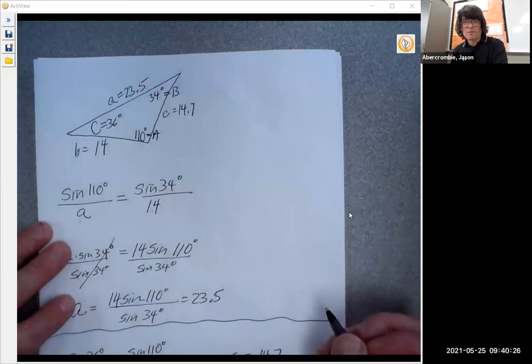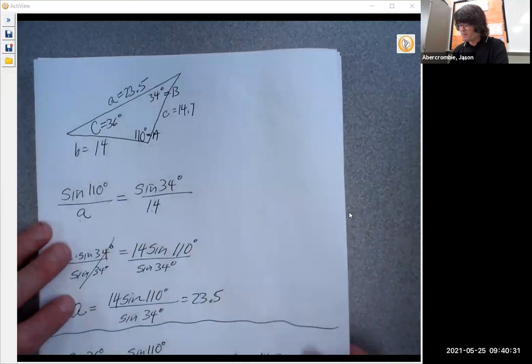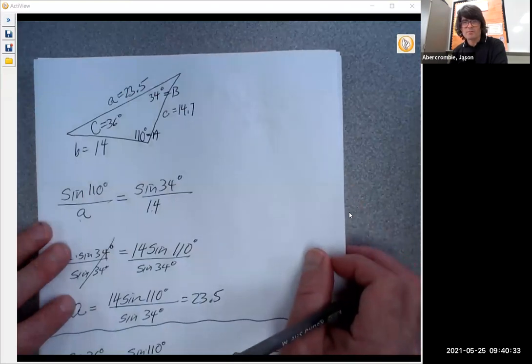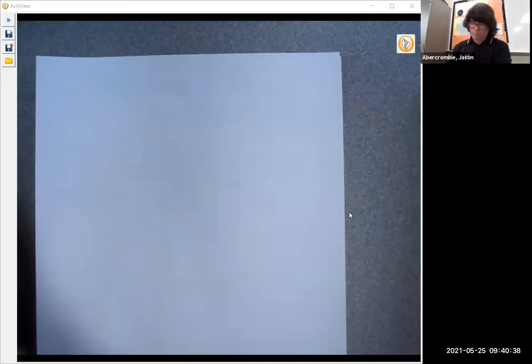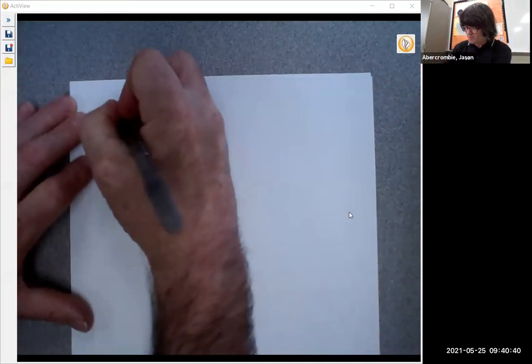So now you have all the sides and all the angles and you got the whole triangle described. Now I'm going to do one more thing with this triangle. I'm going to find the area.